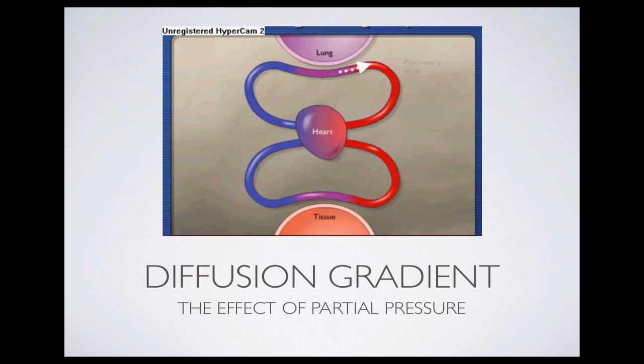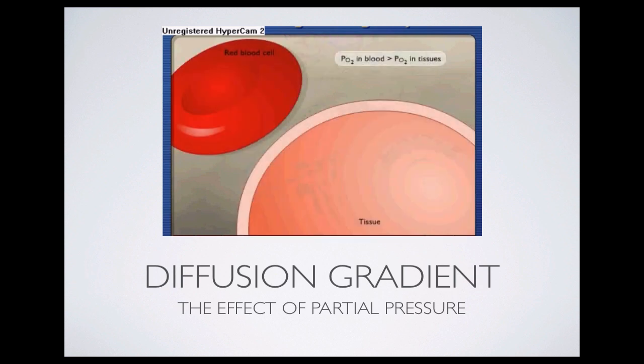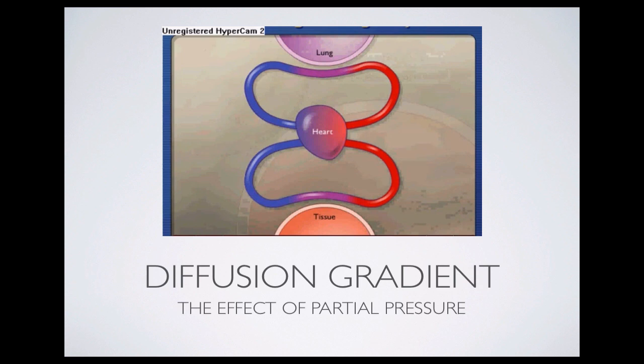Oxygen-rich blood is carried through pulmonary veins to the heart and then pumped through systemic arteries to the body. The PO2 in the blood is higher than the PO2 in the body tissues, so oxygen diffuses out from red blood cells at the body tissues. Also, the PCO2 in the blood is lower than the PCO2 in the body tissues, so carbon dioxide diffuses into red blood cells there. Oxygen-poor blood is carried through systemic veins back to the heart and is pumped through pulmonary arteries to the lungs, where gas exchange again replenishes the blood with oxygen and removes carbon dioxide.